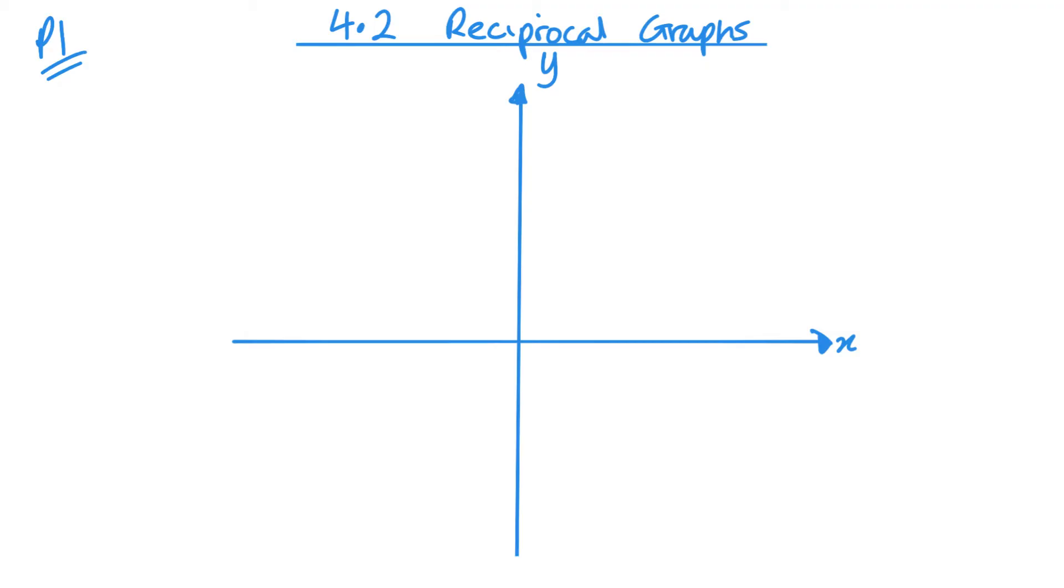This reciprocal graph is a graph that is of this kind of form, like 1 over x, 3 over x, minus 2 over x, minus 3 over x squared, all that kind of thing.